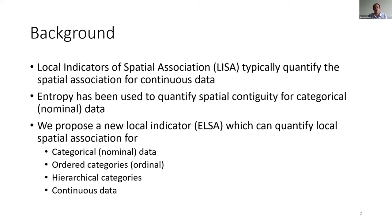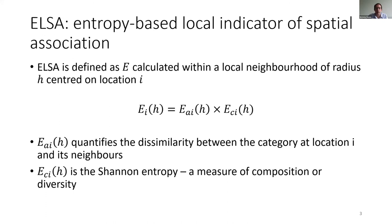What you'll be aware of is that there are several local indicators of spatial association — things like Moran's I or DREC — that are mainly working with continuous data. We've also seen entropy used to quantify spatial contiguity or spatial association in terms of nominal categorical data. The interest in this topic came up when we were looking at ecological variables for species distribution modelling, and we realised we're looking at a range of different data types: nominal data, continuous data sets, ordered categories, or indeed hierarchical categories, like a hierarchical land-cover classification scheme. And that led us to propose ELSA.